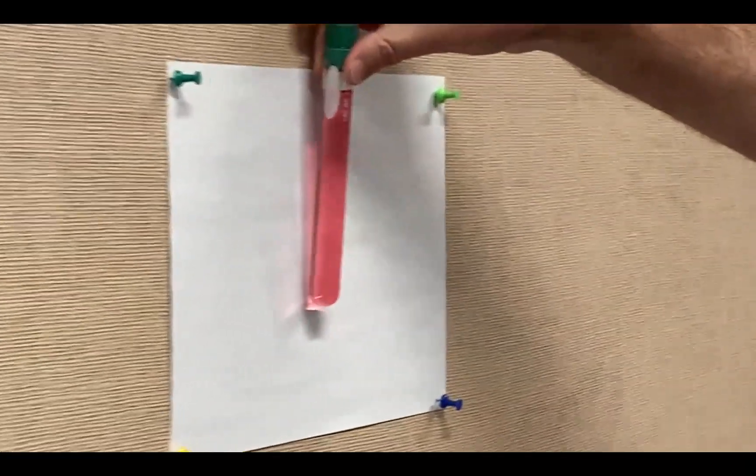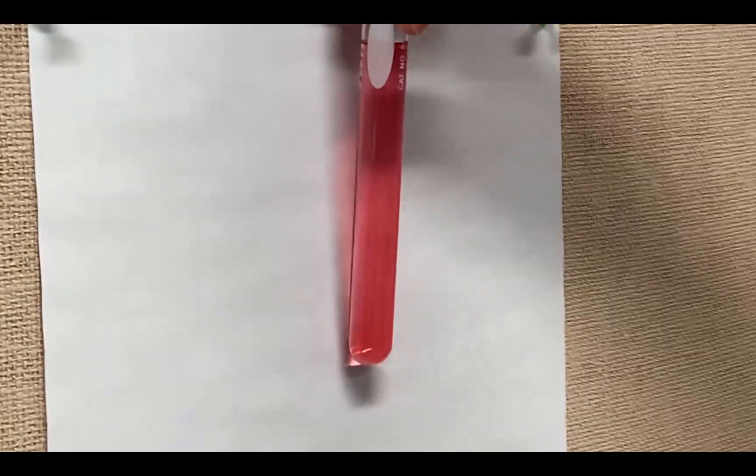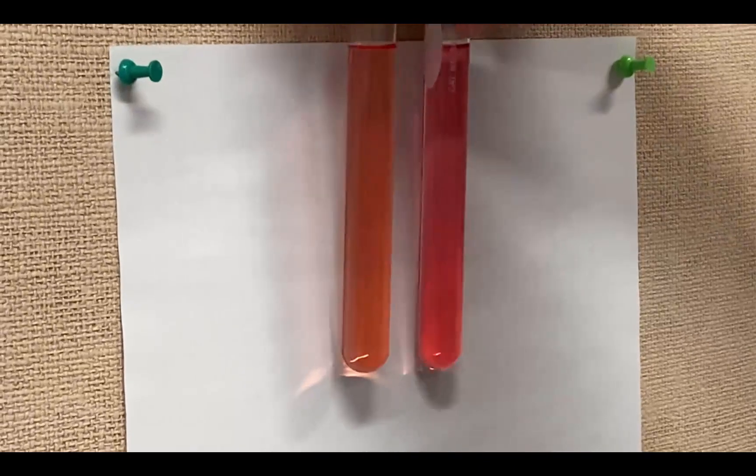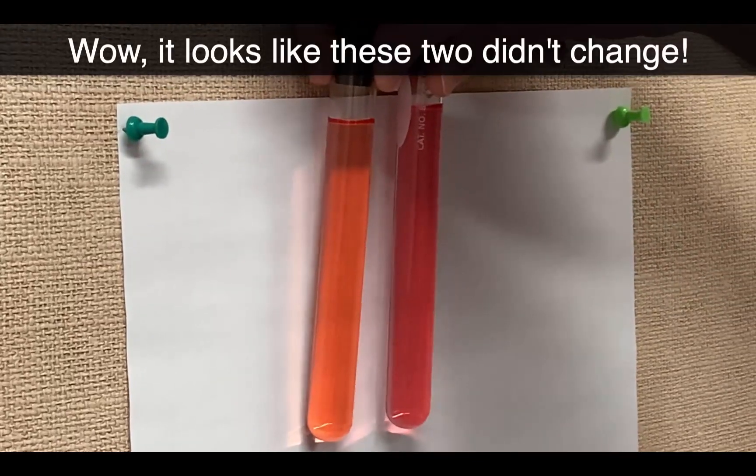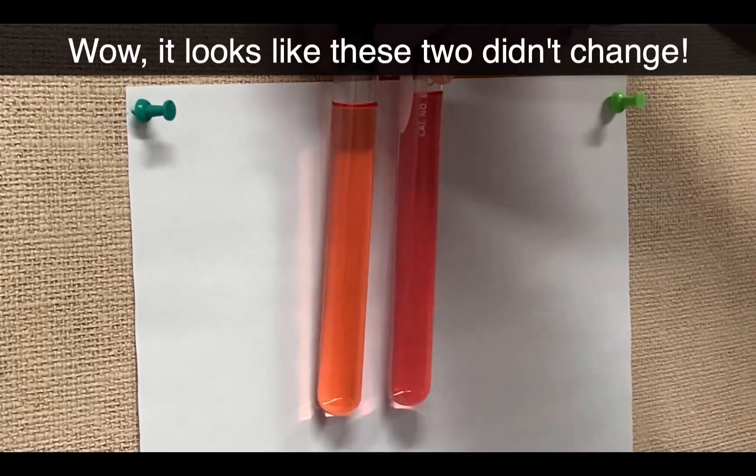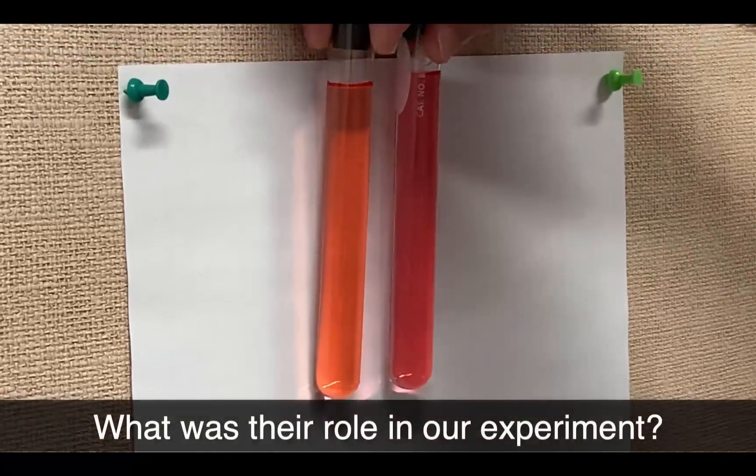If we take a look at tube number four, we can still see that nice pink there. I can hold up tube number three next to it to ensure they are indeed still different colors, just as they were when we first placed them in.